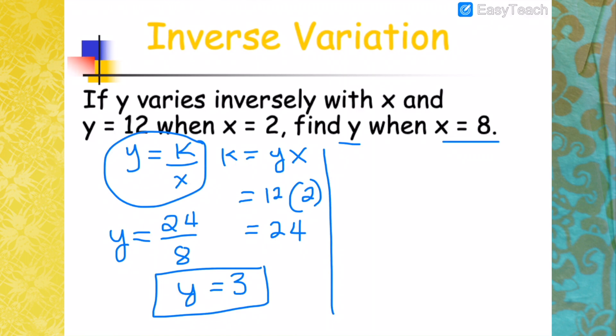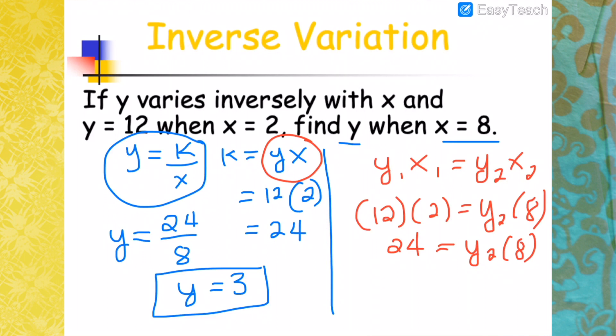Using the other way of solving this, since this is multiplication of your Y and X, you'll have Y1 X1 equals Y2 X2. So 12 times 2 will be 24 equals Y2 times 8. Therefore, Y2, transferring 8, will be division. 24 divided by 8 will again be 3, which is exactly the same as the other way of doing it.